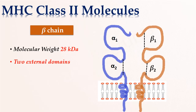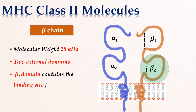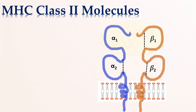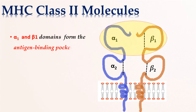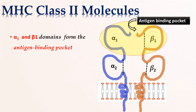The beta-2 domain contains the binding site for the T-cell co-receptor CD4. The alpha-1 and beta-1 domains form the peptide binding groove, or antigen binding site, and it can bind peptides having 13 to 18 amino acids.